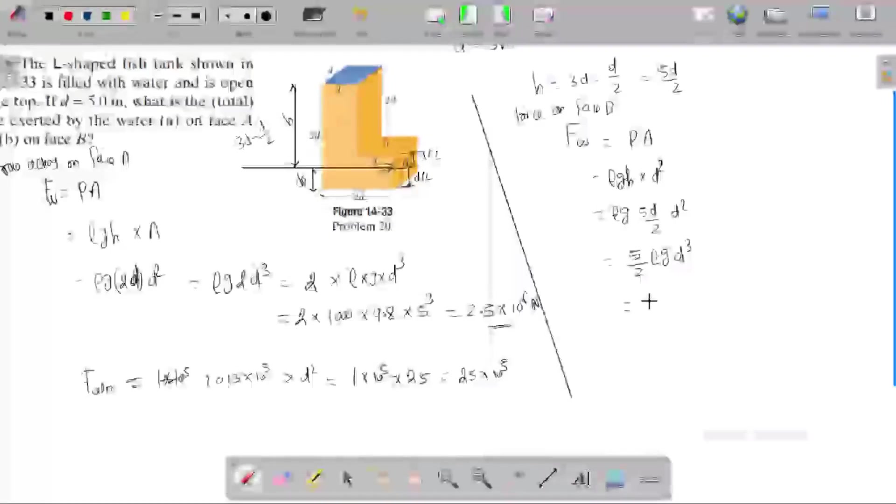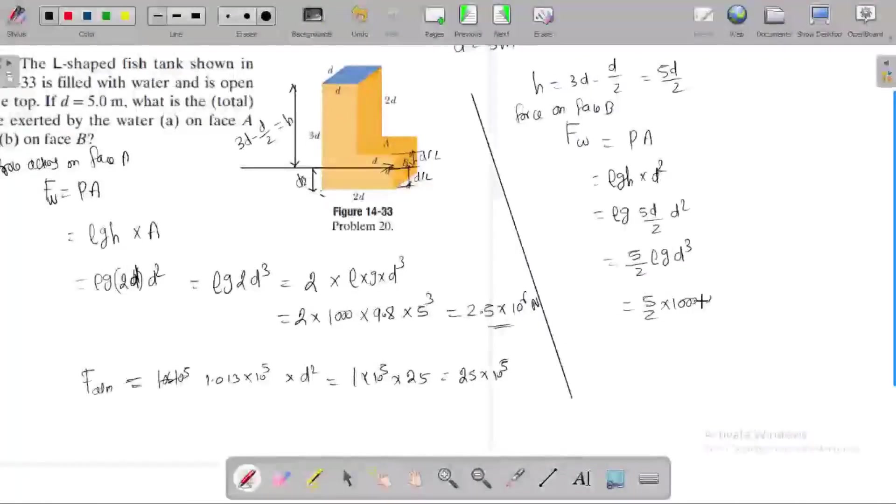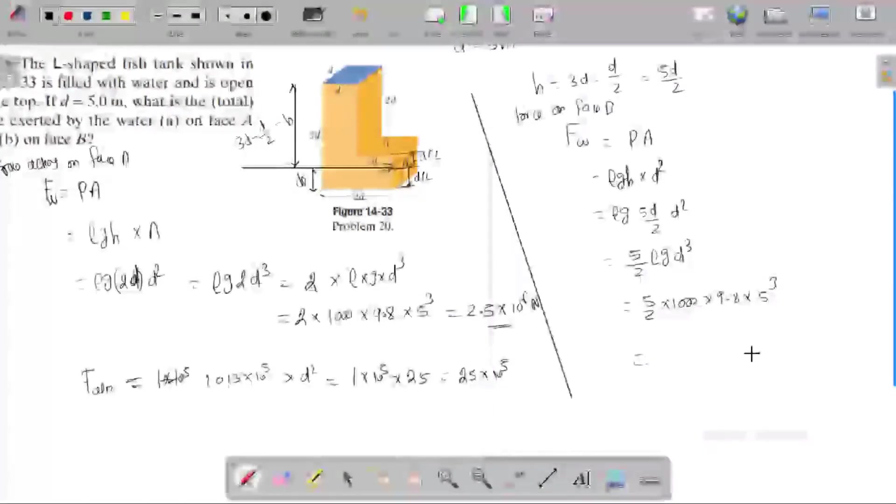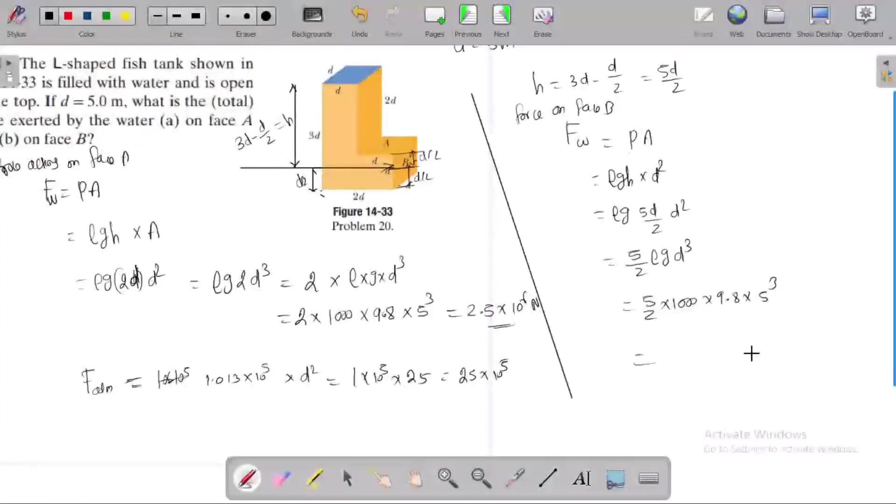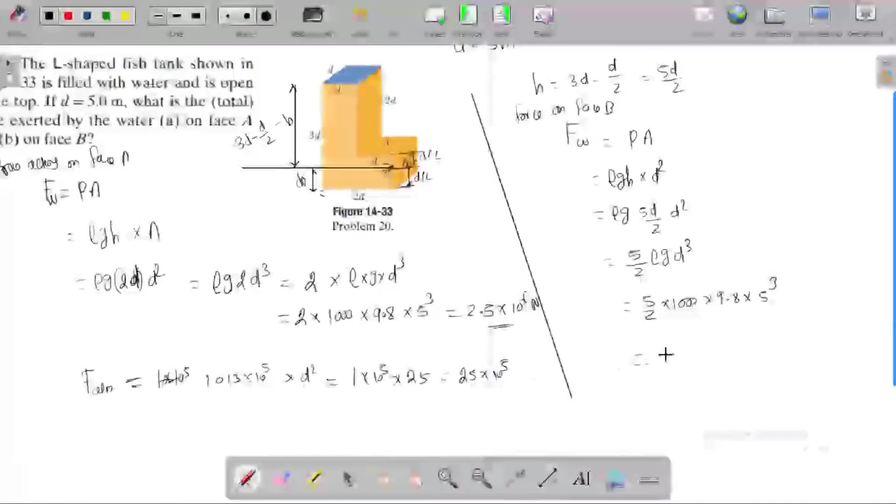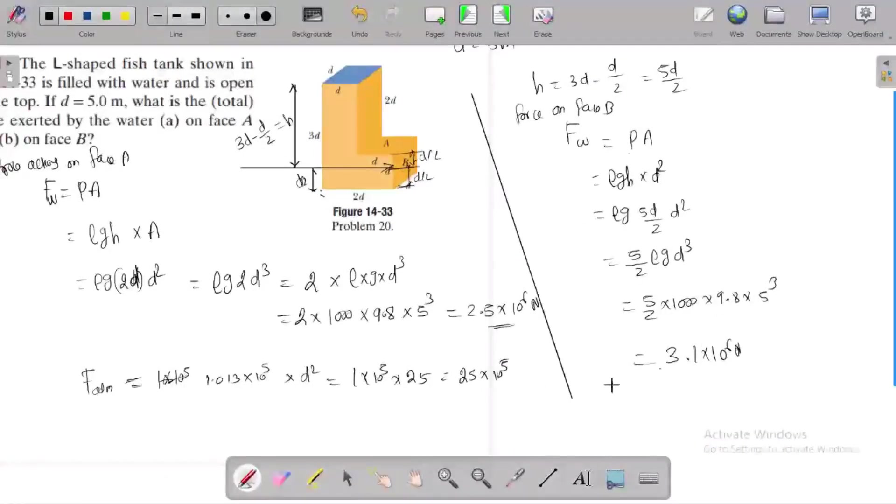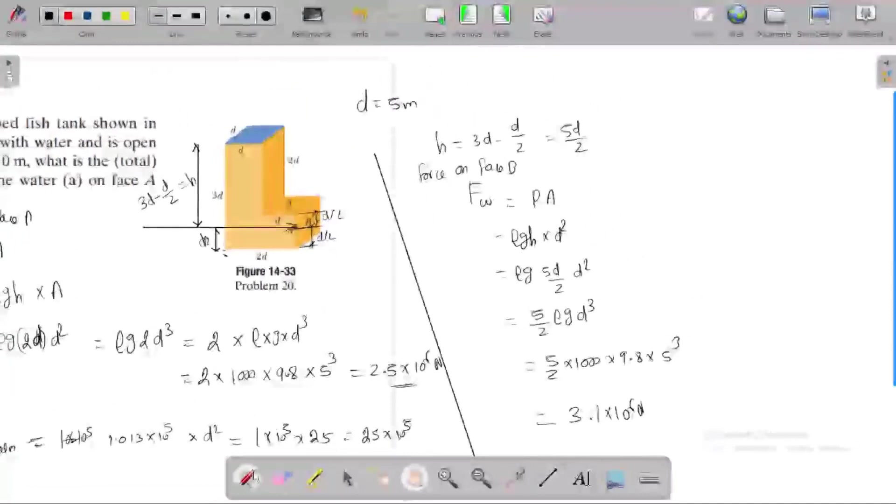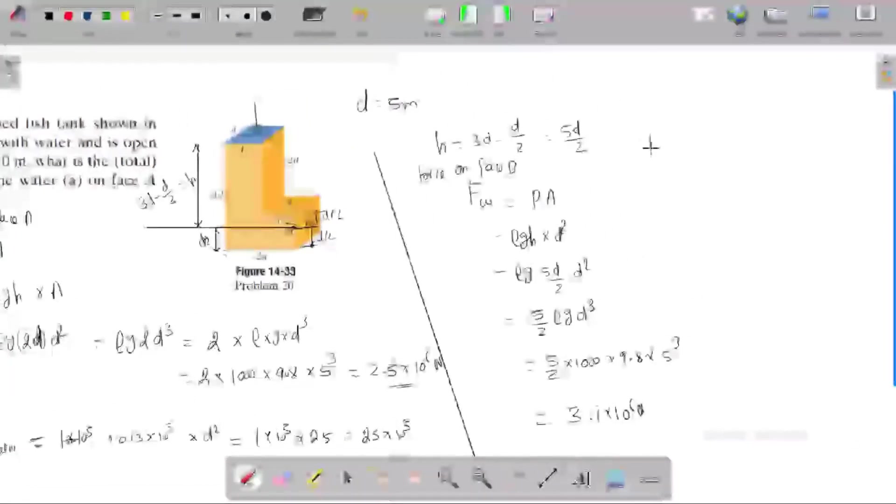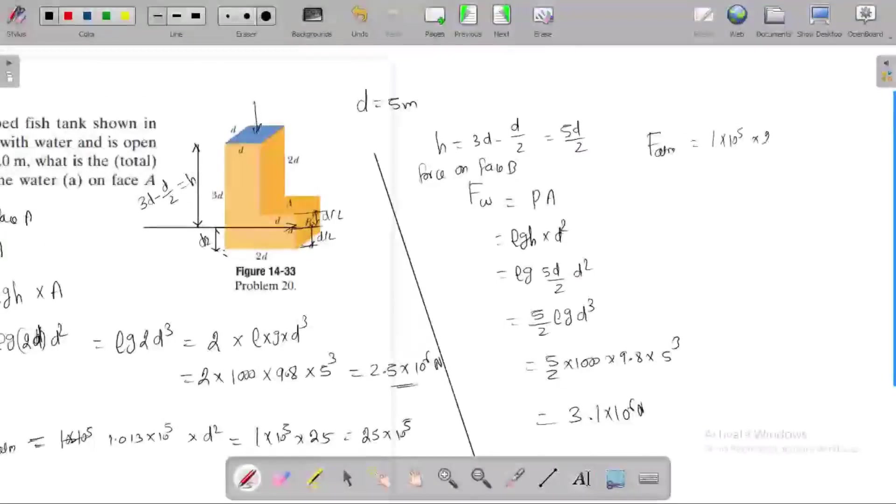Force of the water on face B: density times gravity 9.8 times 5.2, this is the force caused by the water, 5.2 by 2, given by 3.1 times 10^6 newton. We also consider the atmospheric pressure.